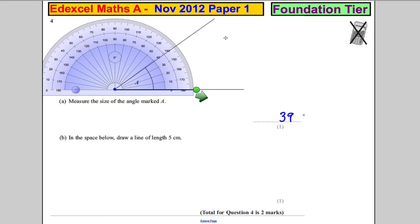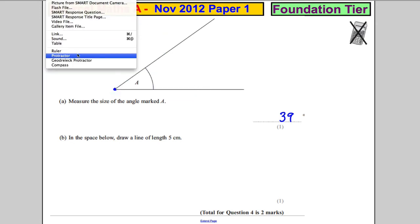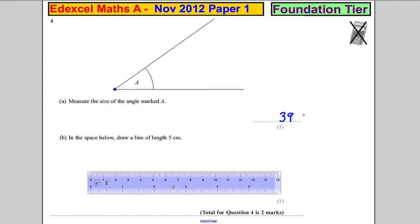And in the space below, draw a line of length five, all we need to do is make sure we have our ruler that day. Get the ruler out, start at zero.